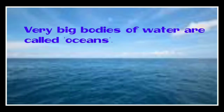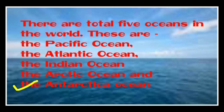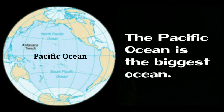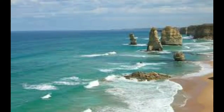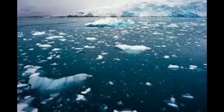Very big bodies of water are called oceans. There are a total of five oceans in the world: the Pacific Ocean, the Atlantic Ocean, the Indian Ocean, the Arctic Ocean, and the Antarctic Ocean. The Pacific Ocean is the biggest ocean in the world, and the Arctic Ocean is the smallest ocean in the world.